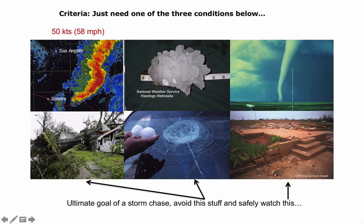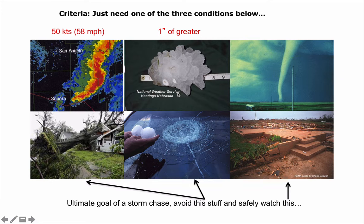In addition, if the thunderstorm makes hail bigger than an inch in diameter, it's considered severe. I chased a thunderstorm back in 2003 that produced a hailstone like this. I was absolutely terrified because these hailstones fall from the sky well in excess of 150 miles an hour and do enormous damage.